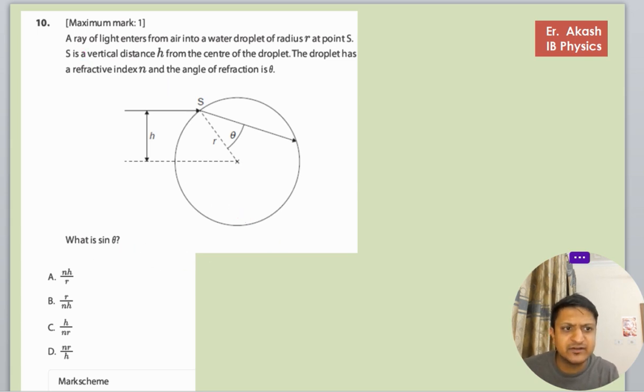In this question, first understand what's happening. These are the two bodies: this is air where the refractive index is one, and this droplet has a refractive index of n.